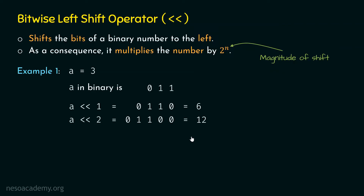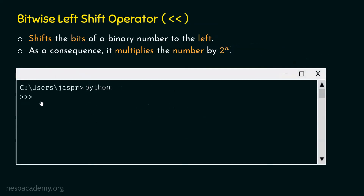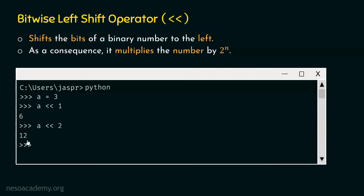Let's open the command prompt and activate the Python interactive shell to verify these results. We type a equal to 3 and hit enter. Then we type a left shift 1 and hit enter — we get 6. Now we perform a left shift 2 and hit enter — we get 12. The results are confirmed.